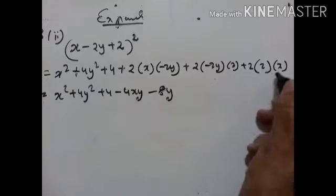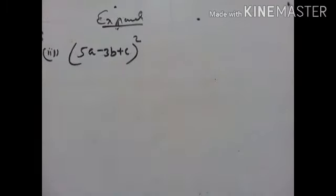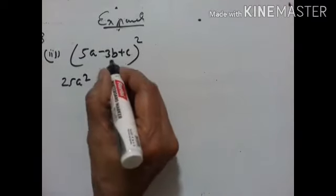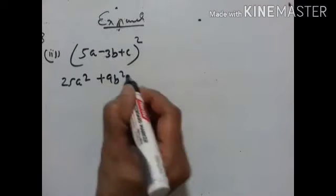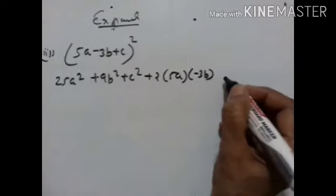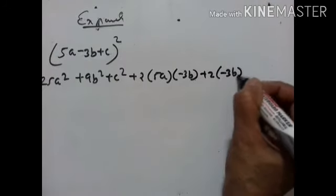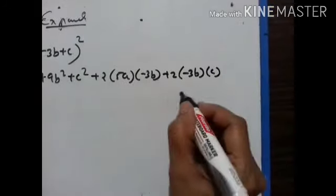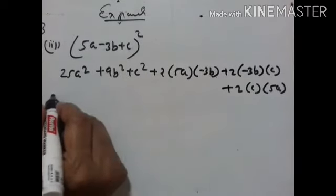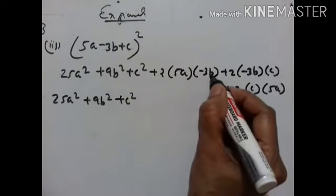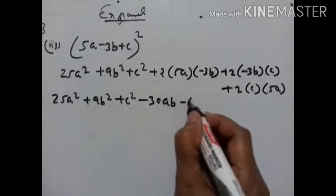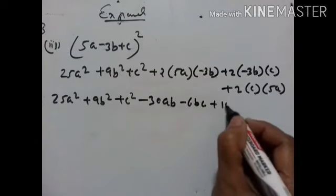Now (5a minus 3b plus c)²: 5a square is 25a square, minus 3b into minus 3b gives plus 9b square, plus c into c gives c square. Plus 2 into 5a into minus 3b, plus 2 into 5a into c, which gives 25a square plus 9b square plus c square minus 30ab plus 10ca minus 6bc.